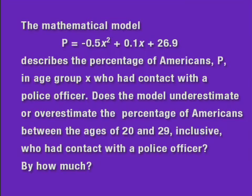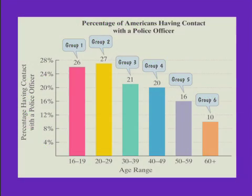So let's refer to the bar graph. Notice that if we're looking at ages 20 to 29 on the bar graph, that's going to be group 2. Note that the bar graph shows group 2 with 27 percent. So 27 percent would be the percentage of Americans in age group 2 who had contact with a police officer.